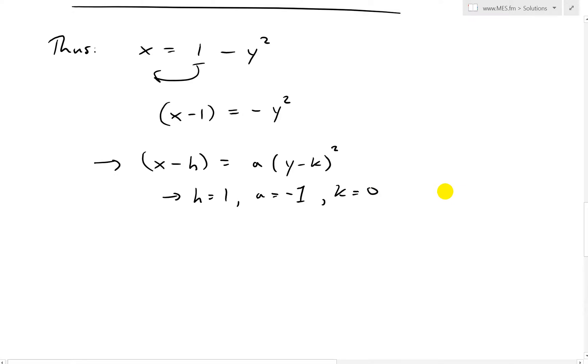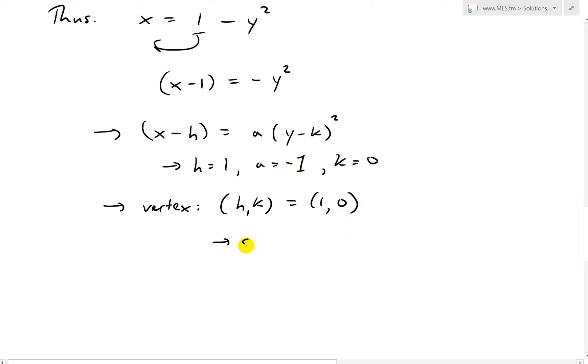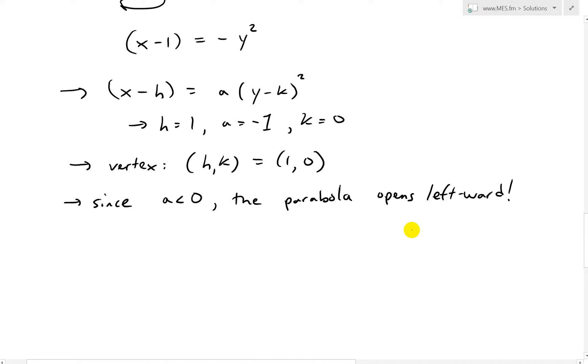So now what we do is we end up shifting. So the new vertex right here, it's going to be h, k. Now this is going to be equal to 1 and 0. And since a is equal to negative 1, it opens to the opposite side. Since a is less than 0, the parabola opens up outwards, or to the left, opens up leftward. So since a is less than 0, the parabola opens up leftward or leftwards.